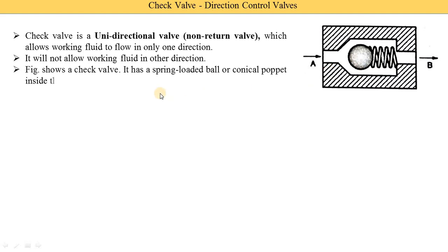The figure shows a check valve. It has a spring-loaded ball or a conical poppet inside the valve housing. This sectional view indicates the valve housing. Inside this valve housing there are two components: the first is the spring and the second is the ball. The check valve comes in two different types. In the first type, a ball is used, as shown in this figure.